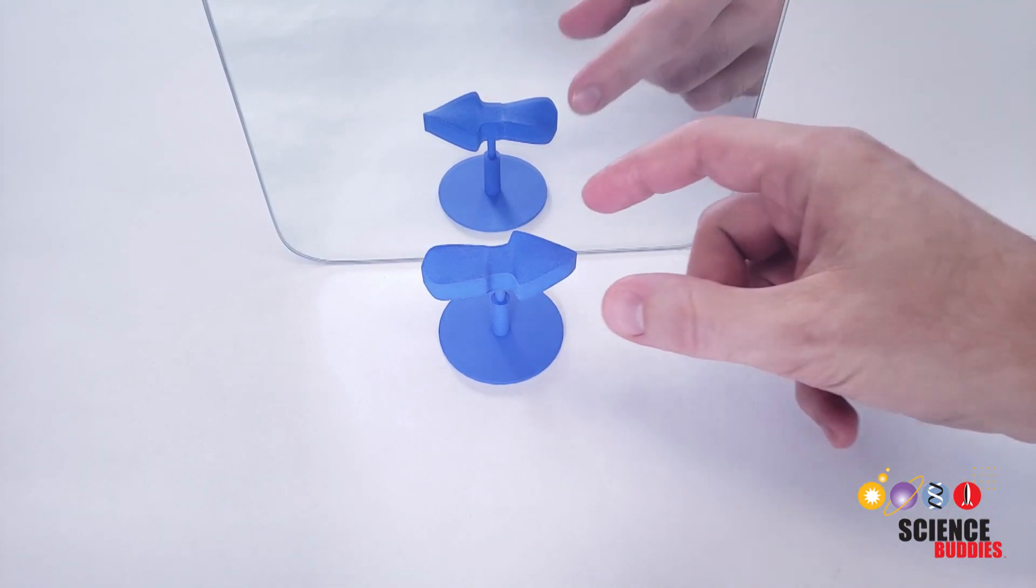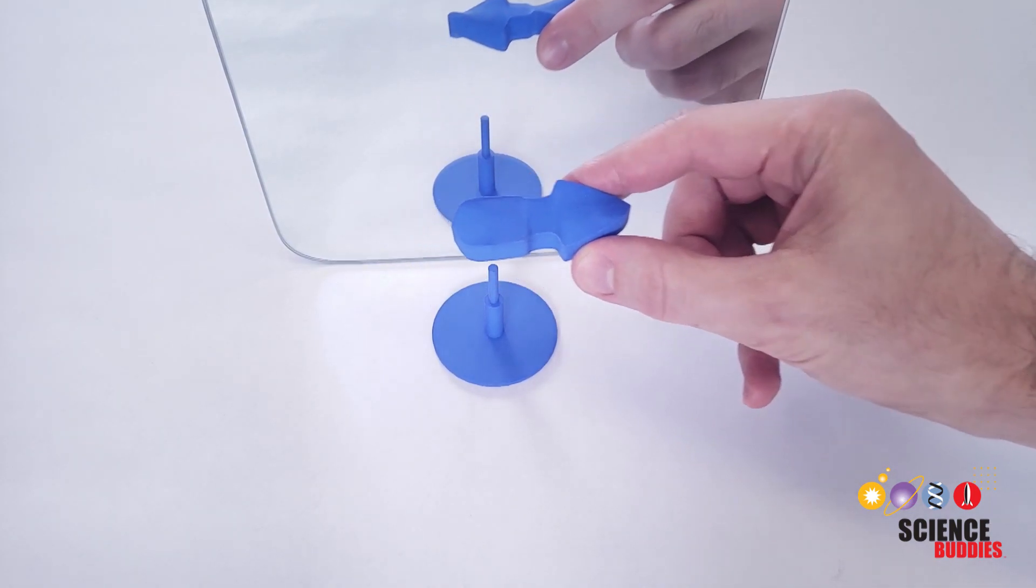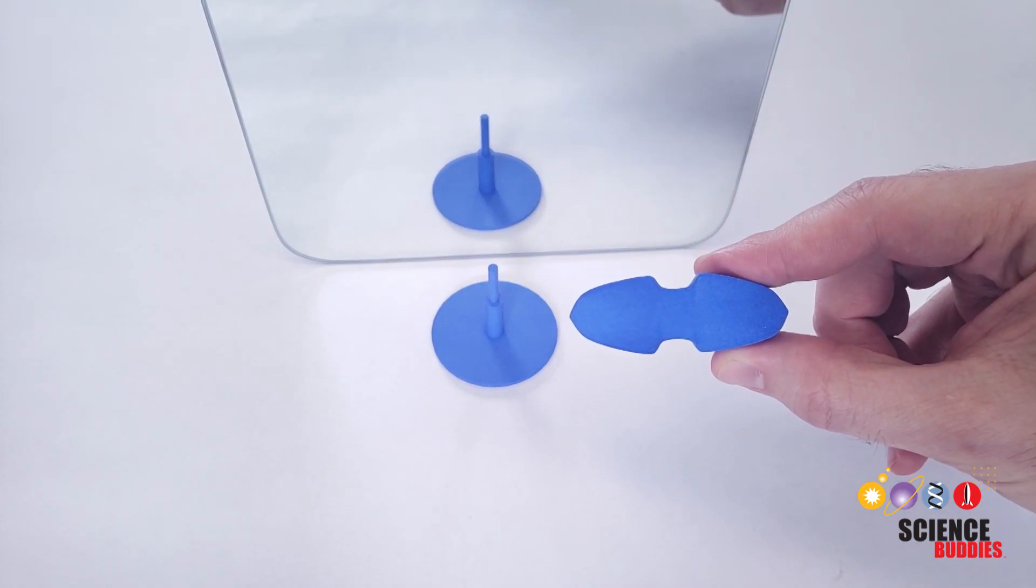The trick to this arrow is perspective. When I pick it up so you can see it from the top, it doesn't look arrow-shaped at all.